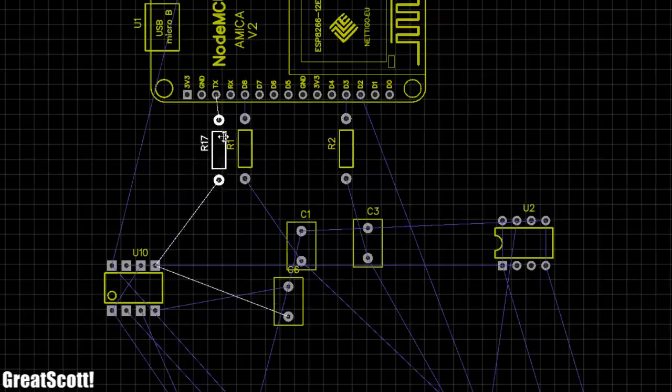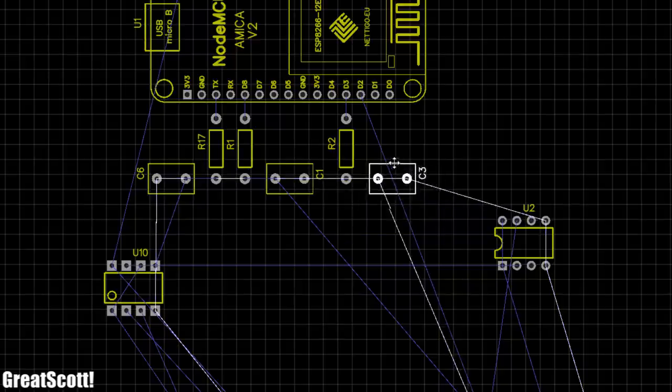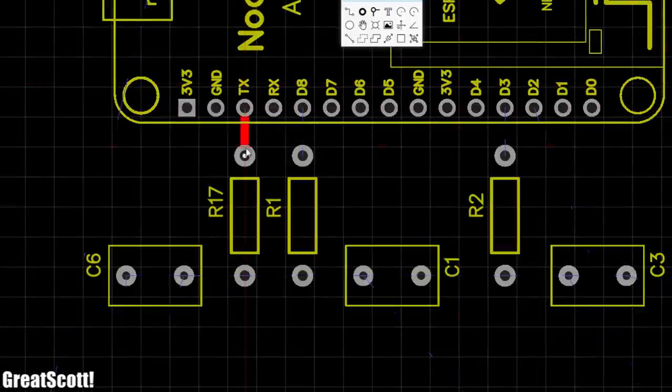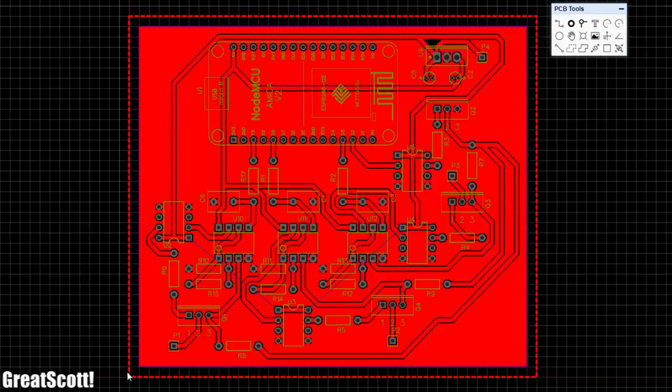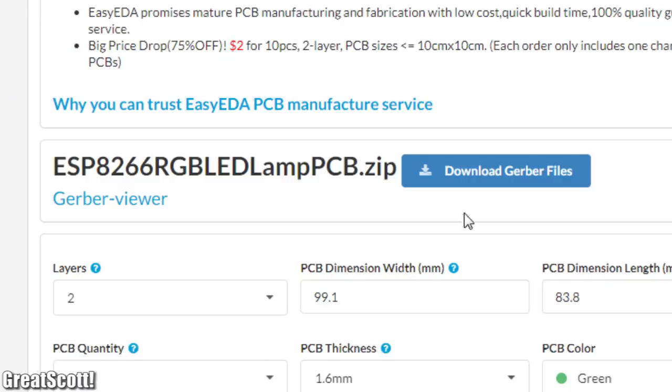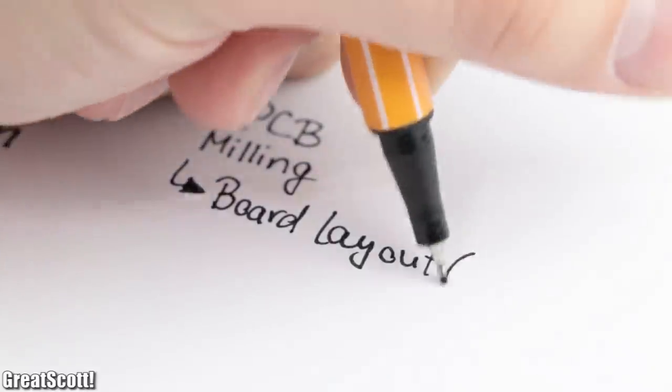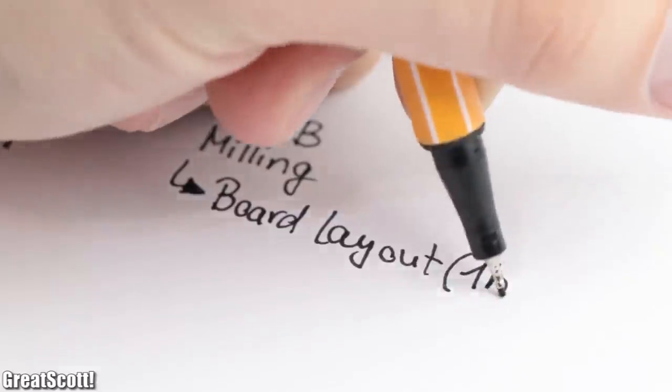The first step to answer this question was to convert the schematic of the circuit into a PCB and create a suitable board layout. After that was done, I clicked the fabrication output button and downloaded the Gerber files which we will need in a minute. This process so far, however, already took me around one hour.